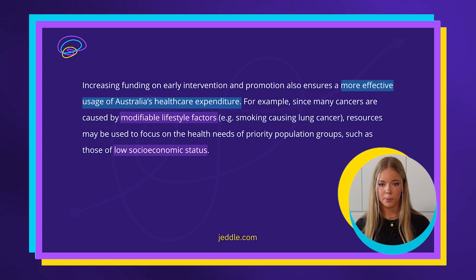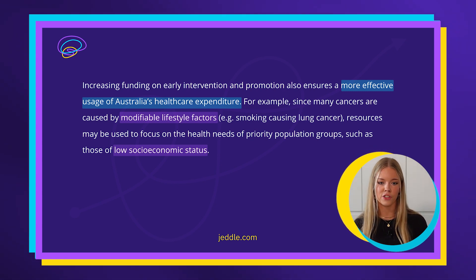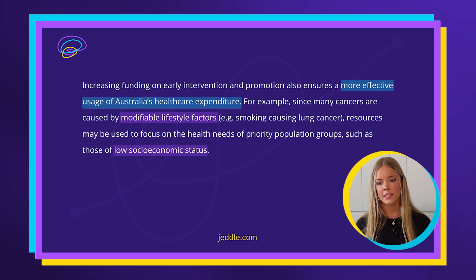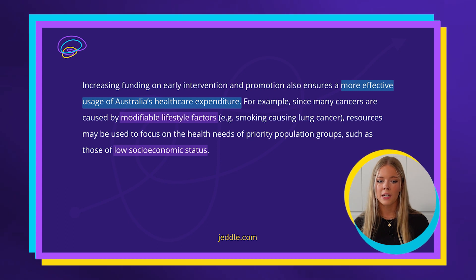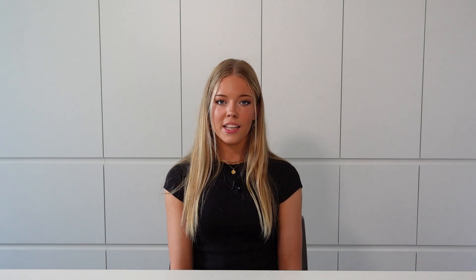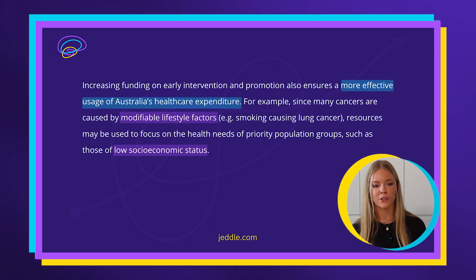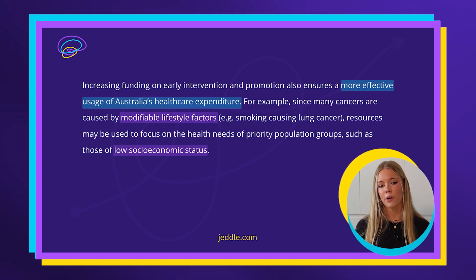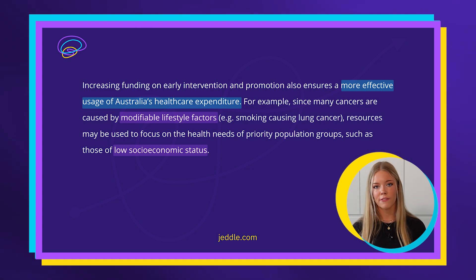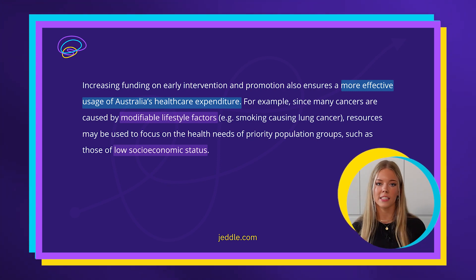Increasing funding on early intervention and prevention also provides a more effective usage of Australia's healthcare expenditure. For example, since many cancers are caused by modifiable lifestyle factors — e.g. smoking causing lung cancer — resources may be used to focus on the health needs of priority population groups such as those of low socioeconomic status. This point is significantly shorter than my other two paragraphs but I still have the same depth of analysis. In blue it says 'a more effective usage of Australia's healthcare expenditure' relating to early intervention and prevention. My example is modifiable lifestyle factors, which I've linked to the specific case of lung cancer and even linked to a priority population group, which is a key area of the syllabus under this topic.